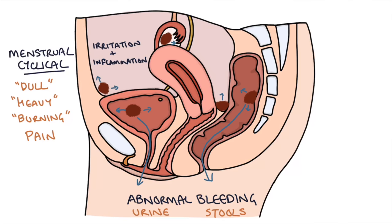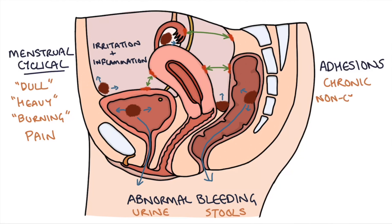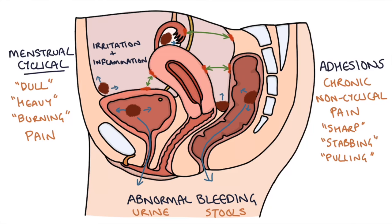The other problem that occurs with endometriosis is that this localized bleeding and inflammation can lead to adhesions. The inflammation causes damage to the local tissues and as they heal they develop scar tissue that binds them together. You can end up with different organs attaching to each other — for example, the ovaries could attach to the peritoneum, or the uterus could attach to the bowel. Recurrent surgeries can also contribute to adhesions, leading to a chronic non-cyclical abdominal and pelvic pain that can be sharp, stabbing, or pulling in nature, and can make the patient feel quite nauseated.